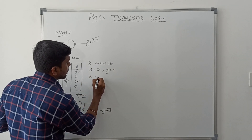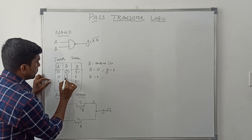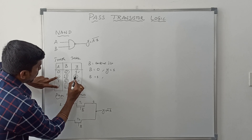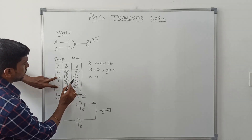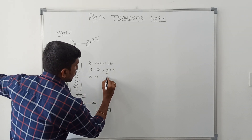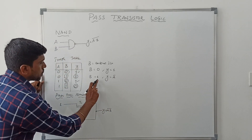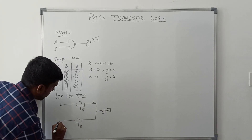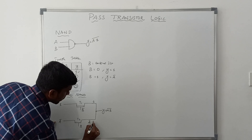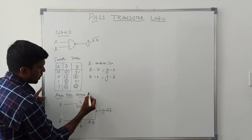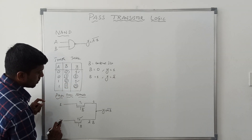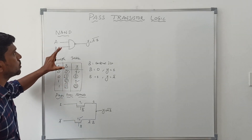Next case: B value equals 1. When A is 0 the output is 1, and when A is 1 the output is 0 — which is the complement of A. So when B value equals 1, Y equals A bar. The input of T2 transistor is A bar, and the expression for T2 is A bar dot B. When B equals 1, transistor T2 turns on and the complement of A is transferred to the output. This is the basic operation of NAND gate using PMOS transistor logic.